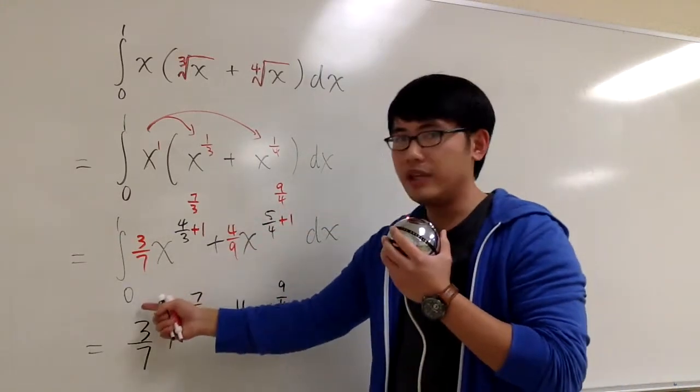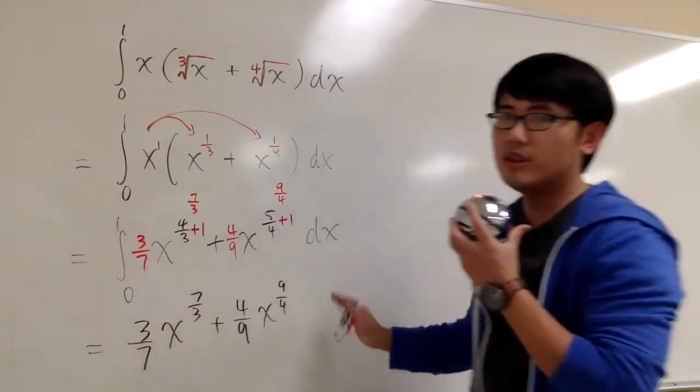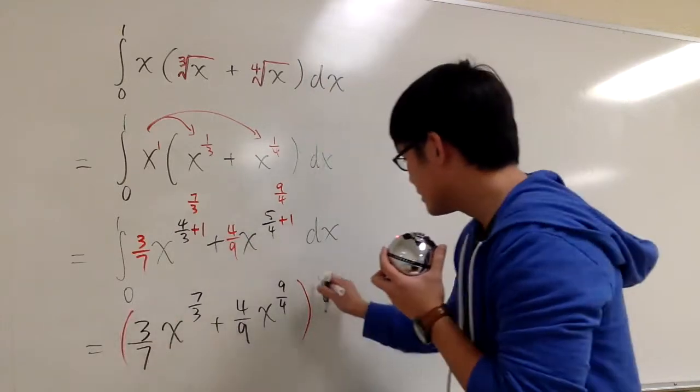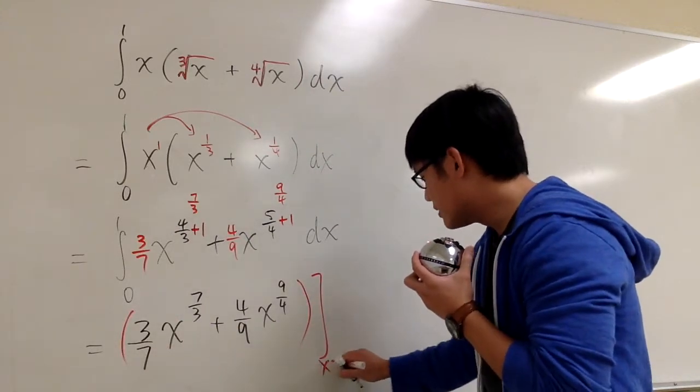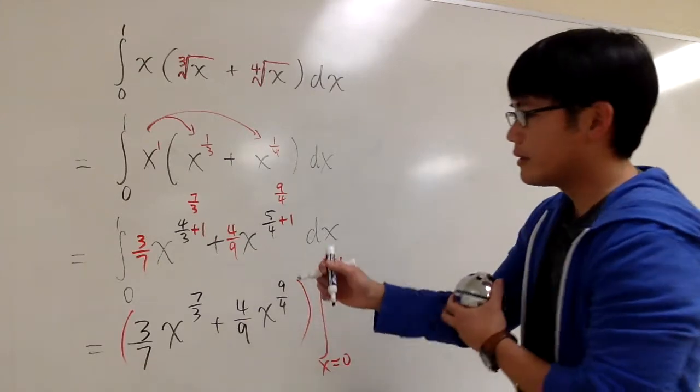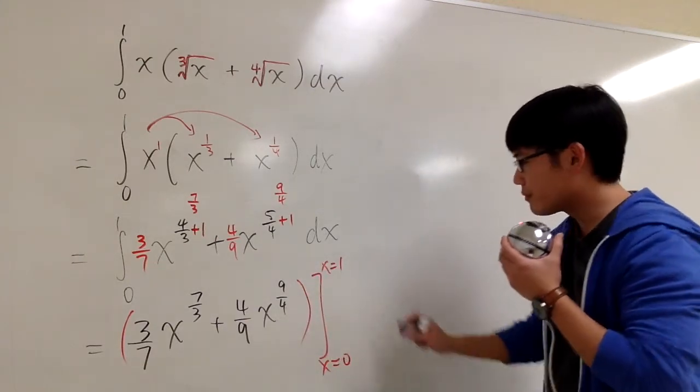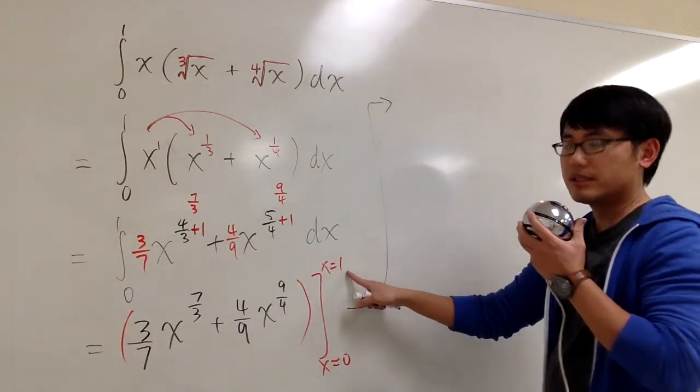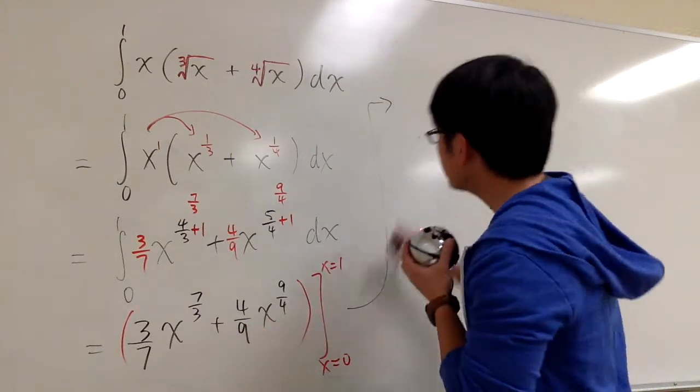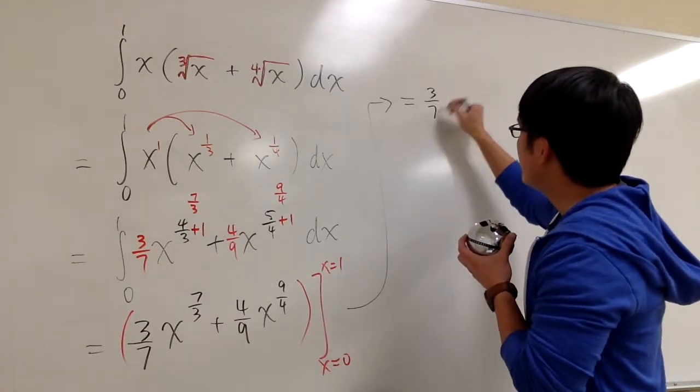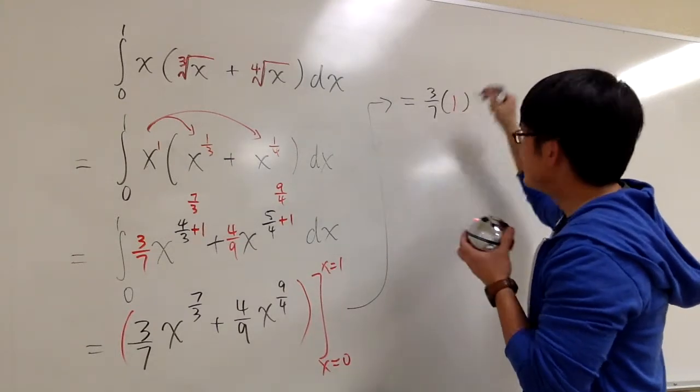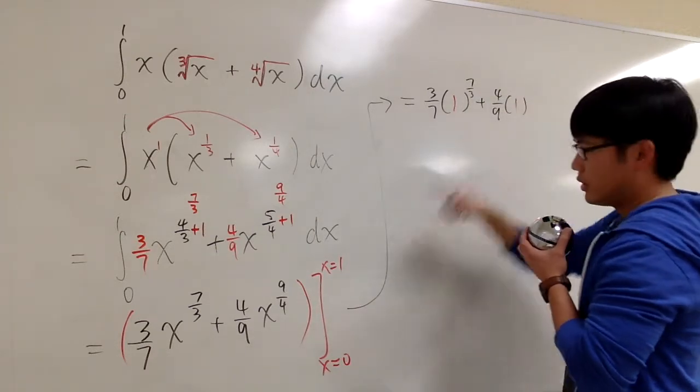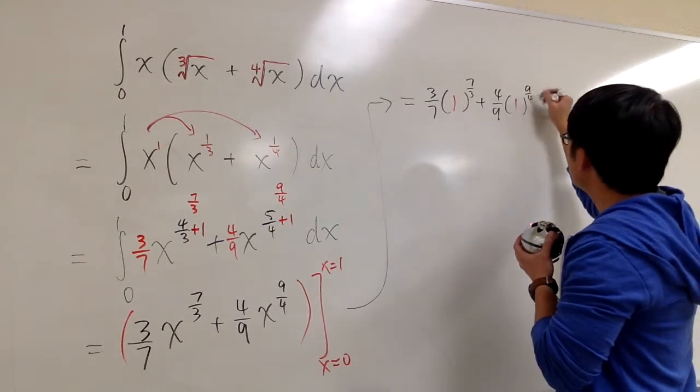That's the anti-derivative. And because we have numbers, this is a definite integral, we don't need to worry about the plus c. All we need to worry right now is we are going to plug in x is equal to 0 right here, x is equal to 1. The integral is going from 0 to 1. So let me just show you the computation. We plug in the upper limit first. Plug in 1 to all these x. So we are going to get 3 over 7 times 1 to the 7 over 3 power, plus 4 over 9 times 1 to the 9 over 4 power.